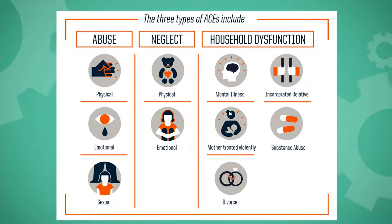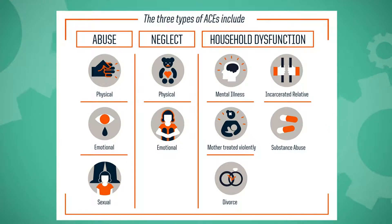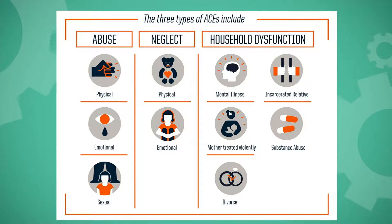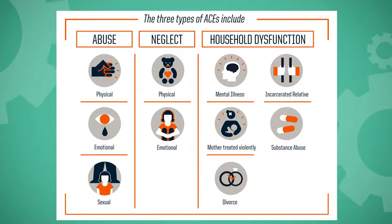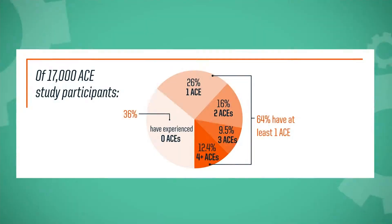They counted up the number of these areas that someone might have experienced in their childhood. And what they found really amazed them: 64 percent of the adults in this study reported at least one of these areas of adversity in their childhoods. And in fact, more than one in five — about 22 percent — reported adversity in three or more categories of these ACEs in their childhoods.